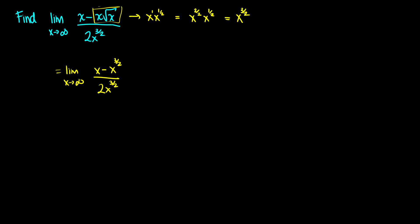At this point we could just do something really simple — look at the highest power in the numerator and denominator and compare how fast they grow. These grow at the same speed, so we're likely going to get a numerical limit. In fact we will. The numerator's leading term is negative x to the 3 halves over 2x to the 3 halves, and if we simplify this we get negative 1 half. So that will be our limit, but let's show this algebraically.